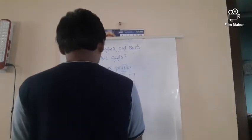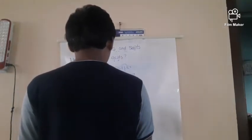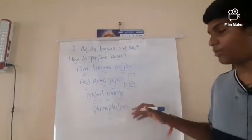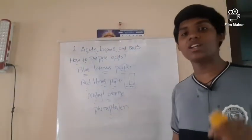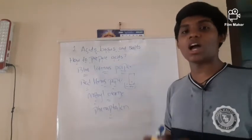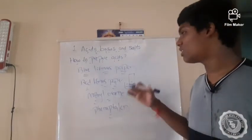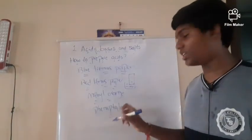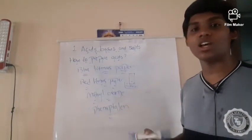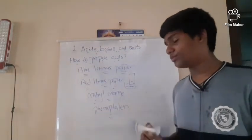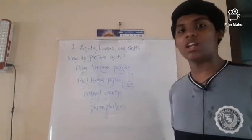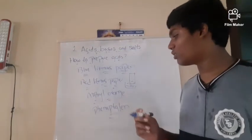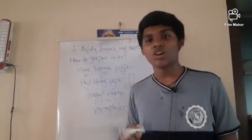Phenolphthalein indicator: in acidic medium, phenolphthalein shows no color — it is colorless. When it changes into any color, it is not an acid. When it remains colorless, we conclude that the substance is an acid.